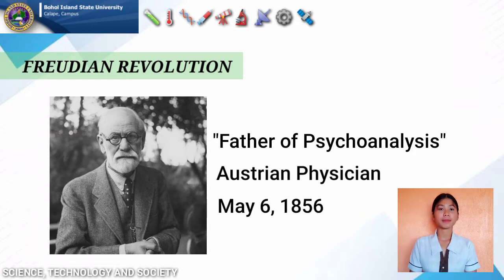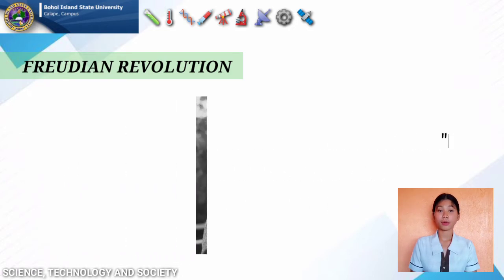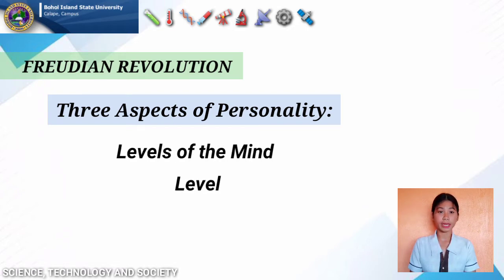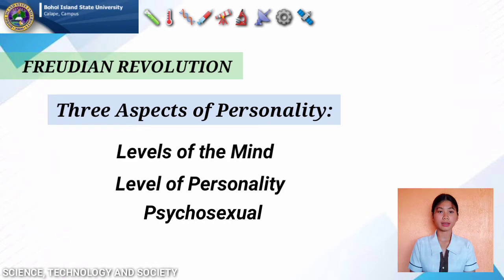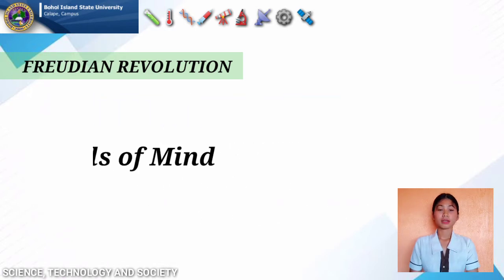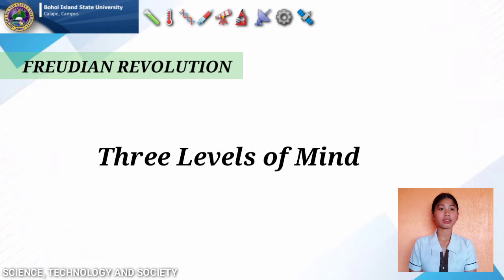With his theory, Freud explained that there are many conscious and unconscious factors that can influence behavior, emotions, and personality. Freud theorized three aspects of personality that significantly influence human behavior: the levels of mind, level of personality, and the psychosexual stages of development.